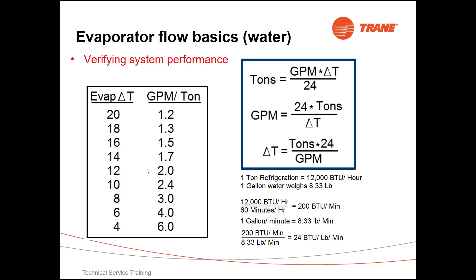So an example would be: let's say we have a machine that's running at 2.4 gallons per minute per ton. That machine should be doing, when it's fully loaded, a 10 degree evaporator delta T — the difference between entering and leaving.